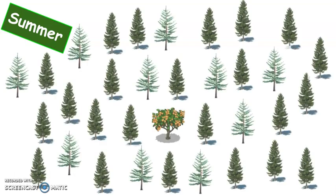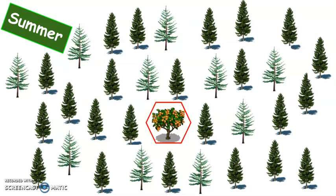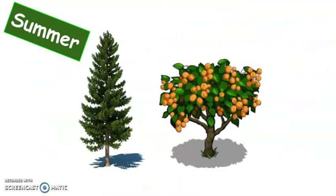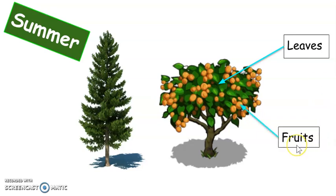Okay, the next one. Now it is summer. Ready to find the deciduous tree? Go! Here it is. How do we know this is the deciduous tree? Well, this deciduous tree has all of its leaves and fruits. The evergreen tree is green, but it doesn't have any fruits.